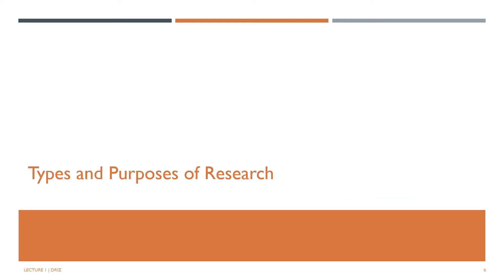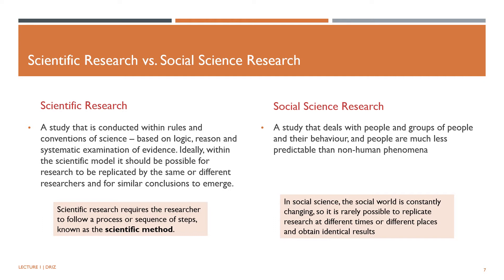Having known what research is and why it's important, as well as the difference between research methodology and research methods, now let's look at the different types and purposes of research. To do research is to investigate the problem systematically, carefully, and thoroughly. This requires the researcher to follow a process — a sequence of steps known as the scientific method. A study that adopts a scientific method is called scientific research, which is conducted within the rules and conventions of science, based on logic, reason, and systematic examination of evidence. Ideally, it should be possible for research to be replicated by the same or different researchers and for similar conclusions to emerge. As students in the field of social science, we engage in social science research. Is there any difference between scientific research and social science research?